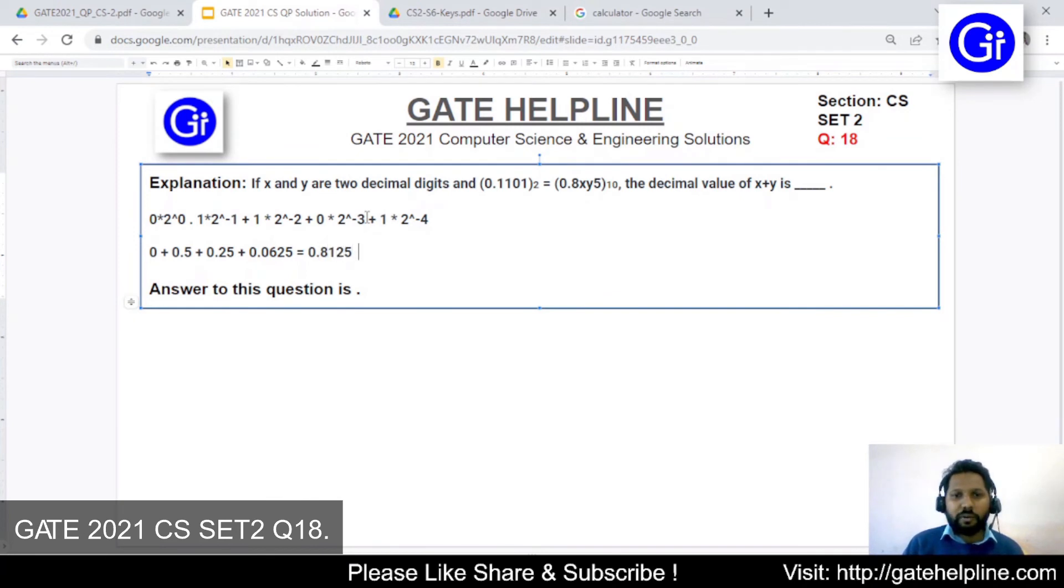Now if you compare this number with this decimal number, you will find that 8125, the first digit and that digit are matching. So the value of x and y is 1 and 2. The sum of x plus y will become 3 as the sum of 1 plus 2 is 3 only.